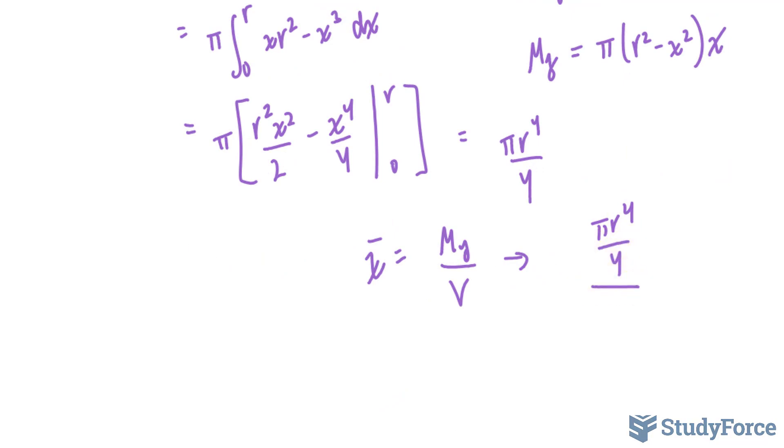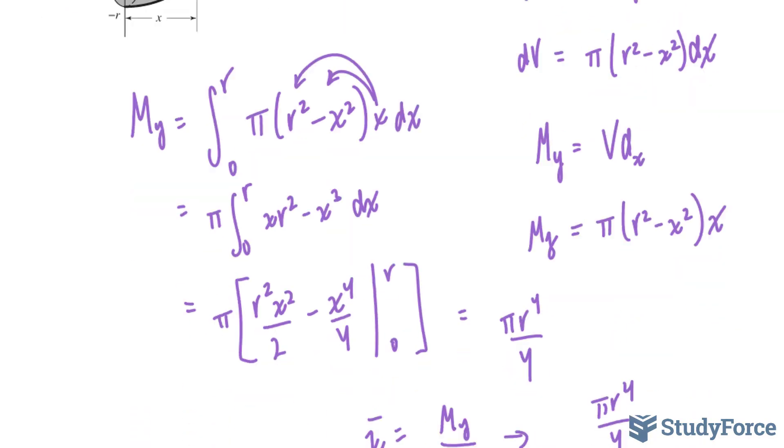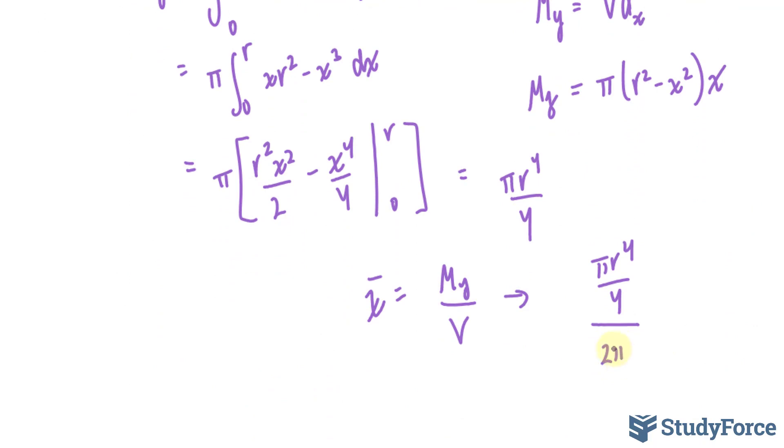My is equal to pi r to the power of 4 over 4. The volume of a hemisphere is right here. We found that earlier, 2 over 3 pi r cubed. And solving for x bar, we end up with 3 r over 8.